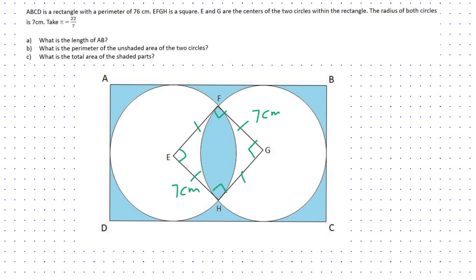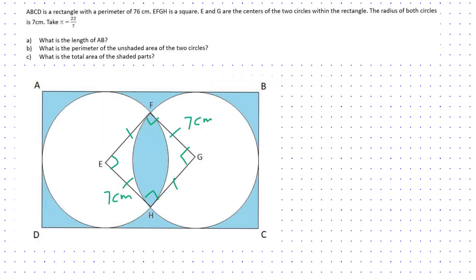Question A is: what is the length of AB? We are told that the perimeter of the rectangle is 76 centimeters, and we need to use this information to find the length of AB. Since the length and breadth of the rectangle are not given, I will say the length is x and the breadth is y centimeters. So the perimeter would be 2x plus 2y, which equals 76 centimeters.